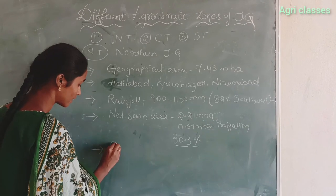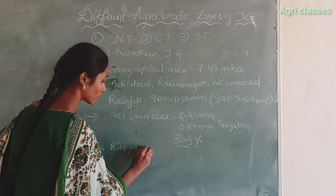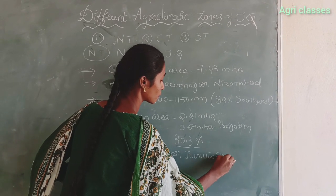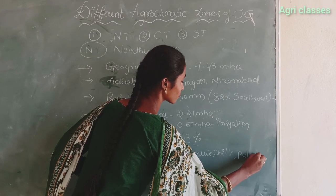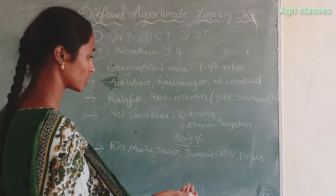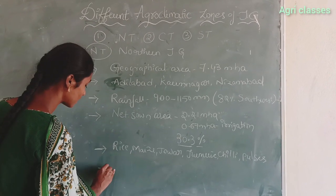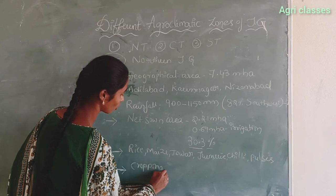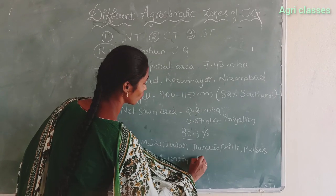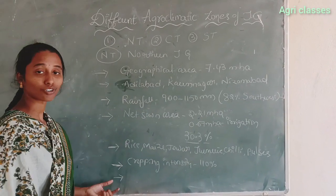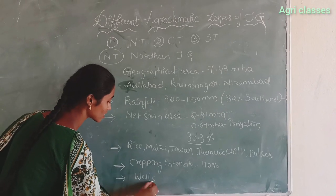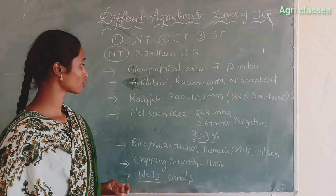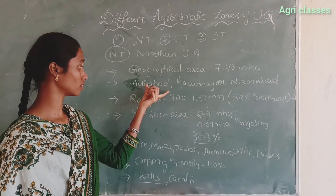The major crops grown in the Northern Telangana zone are rice, maize, jowar, turmeric, chili, pulses, and others. The cropping intensity is 1.10 percent. The source of irrigation is mostly wells, followed by canals.